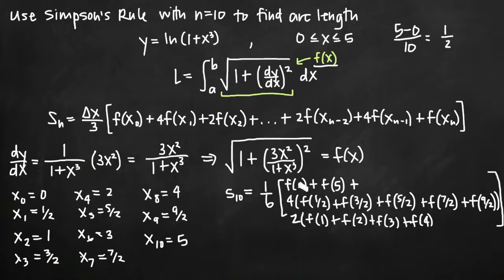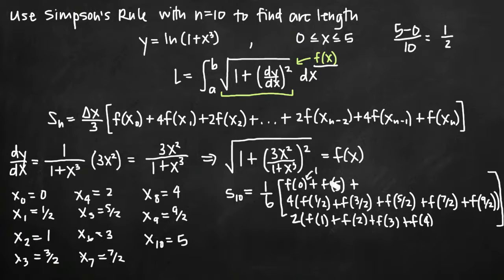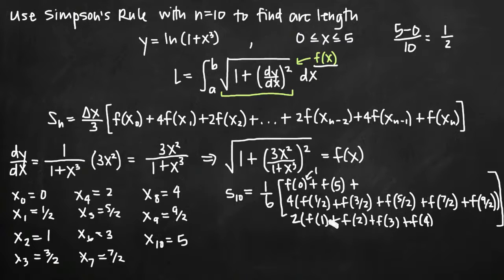For f of 0, we plug 0 into our function: 3 times 0 squared is 0 on top, so the fraction is 0, 0 squared is 0, 1 plus 0 is 1, and the square root of 1 is 1. So f of 0 equals 1. For f of 5, we get 5 squared times 3 equals 75 in the numerator; in the denominator 5 cubed is 125, plus 1 is 126, giving 75 over 126. We square that, add 1, and take the square root to get f of 5. We plug every value — 1 half, 3 halves, 5 halves, 1, 2, 3, etc. — into the function, multiply the odd-indexed ones by 4 and the even-indexed ones by 2, sum everything, and multiply by 1 sixth.